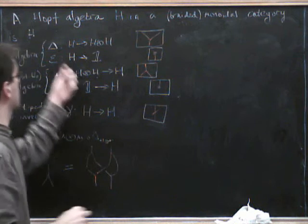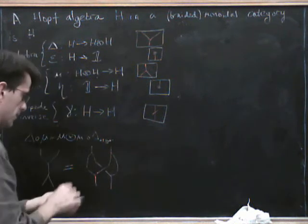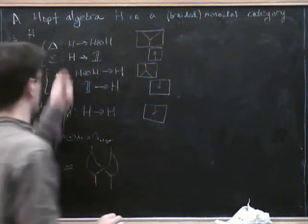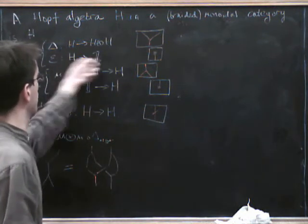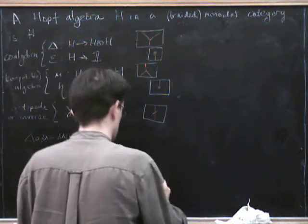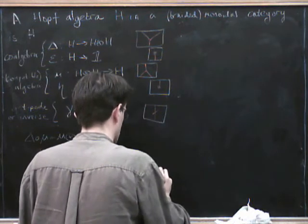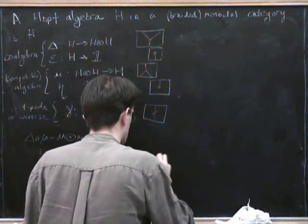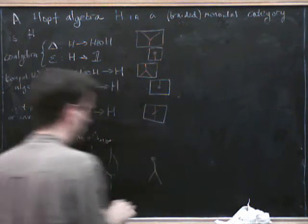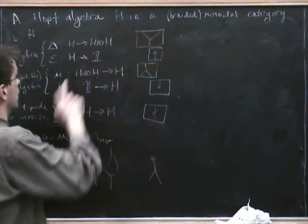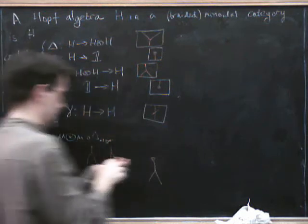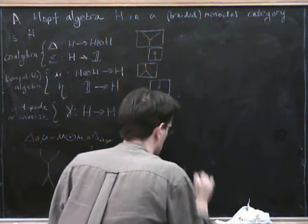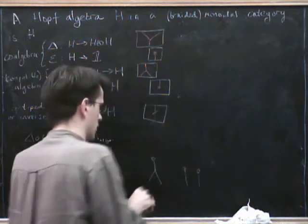So that was mu being compatible with delta, but of course it also has to be compatible with epsilon, but that just says that if we do epsilon, mu followed by epsilon is the same as doing epsilon, so we can write that mu followed by epsilon is just equal to doing epsilon first on h tensor h.